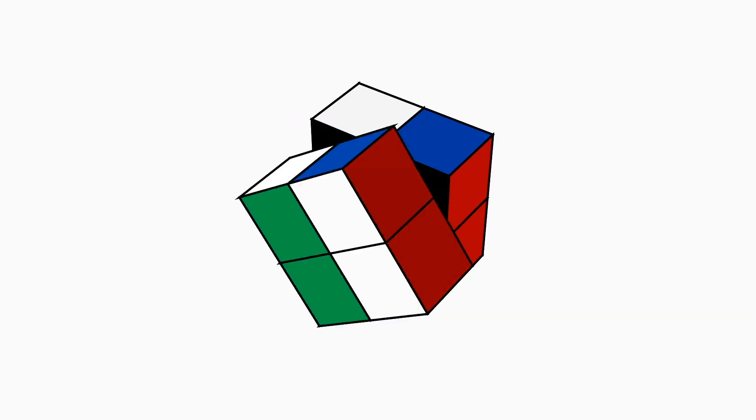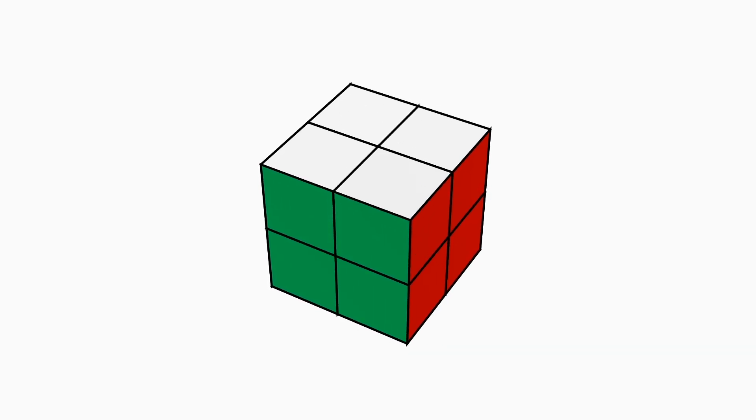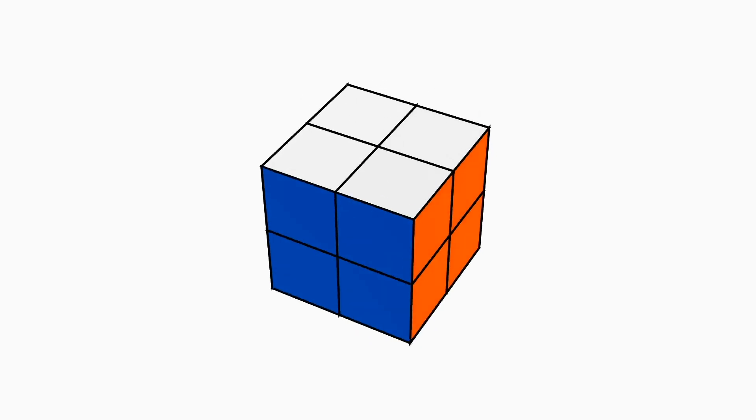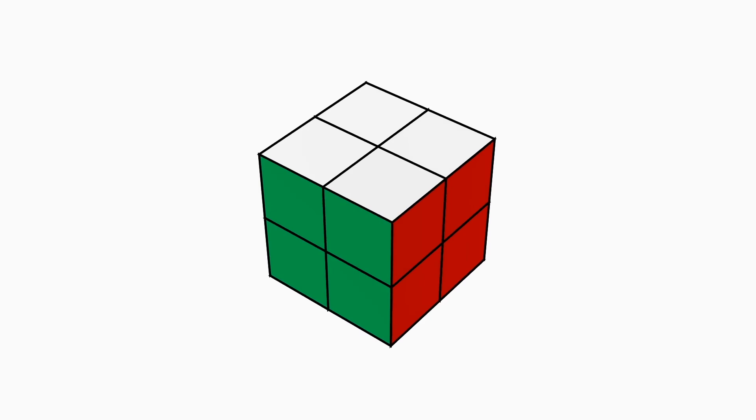We can refer to the position of the white, blue, and orange piece as the buffer position, and the position of the yellow, red, and green piece as the target position. Using this terminology, the Y-perm algorithm swaps the pieces in the buffer and target positions.